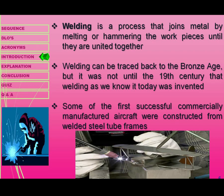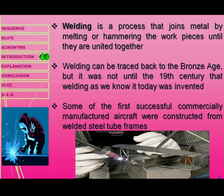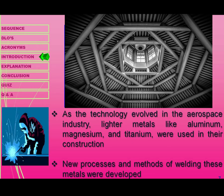Welding is a process that joins metal by melting or hammering workpieces until they are united together — essentially fusing two metals into one. Welding can historically be traced back to the Bronze Age, but it was not until the 19th century that welding as we know it today was invented. Some of the first successful commercially manufactured aircraft were constructed from welded steel tube frames. As technology evolved in the aerospace industry, lighter metals like aluminum, magnesium, and titanium were used.